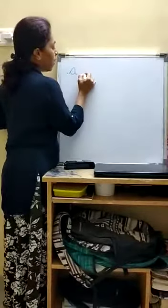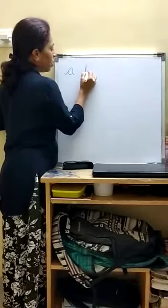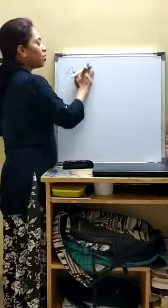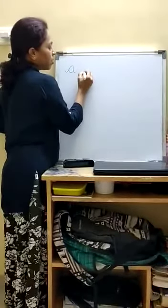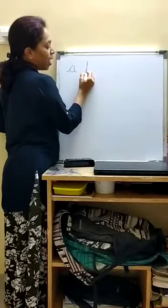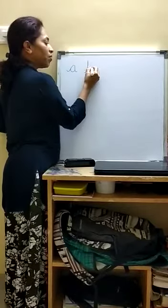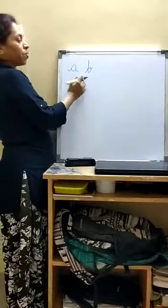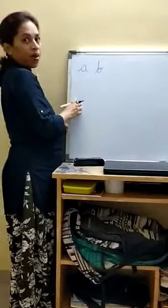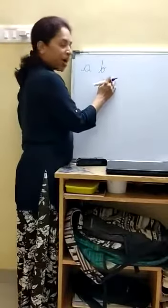Next is B. Which is the next letter? B. How do we write B? Starting from the third line, go to the first line, come back, take a curve, and leave with a tail. B. Name of the letter is B. Sound of letter is B. B-B-B ball. B-B-B bat.